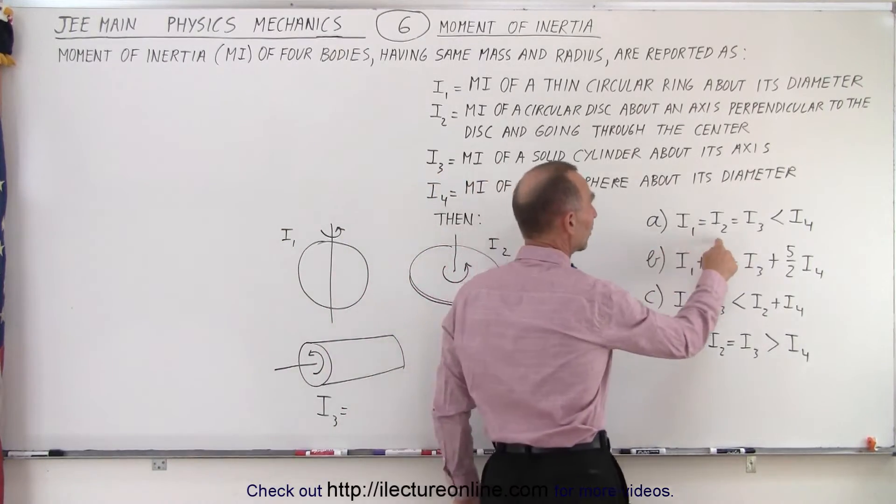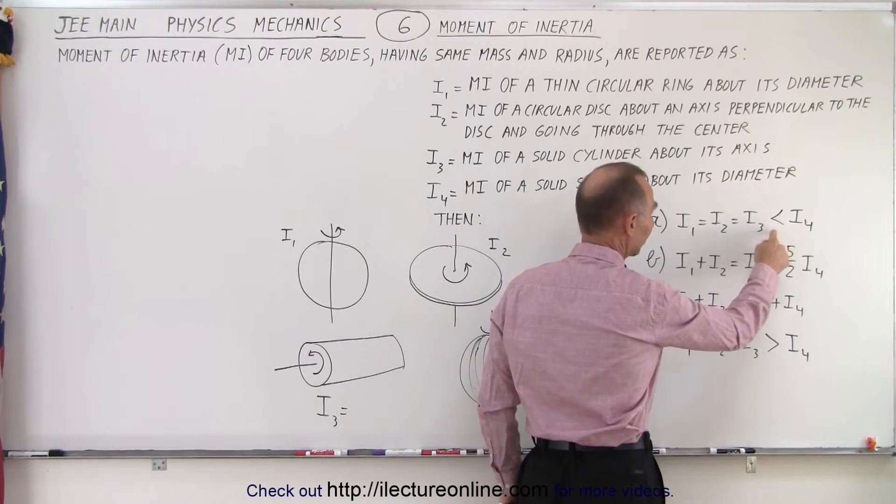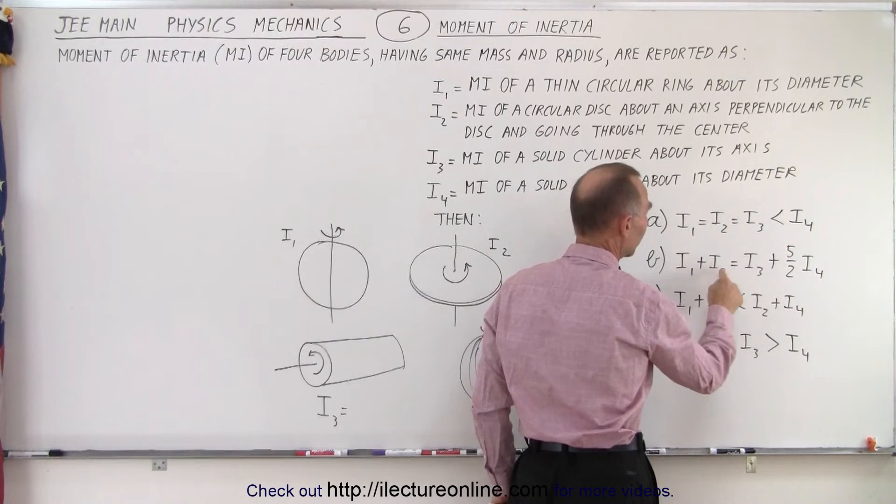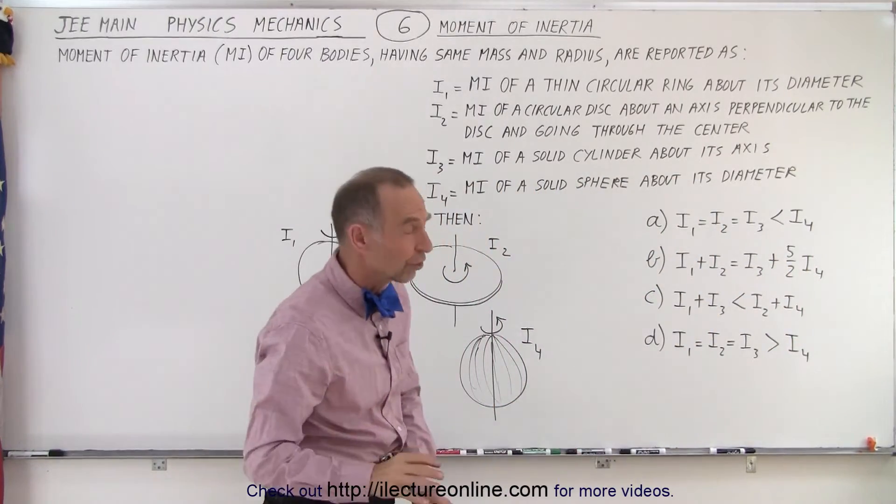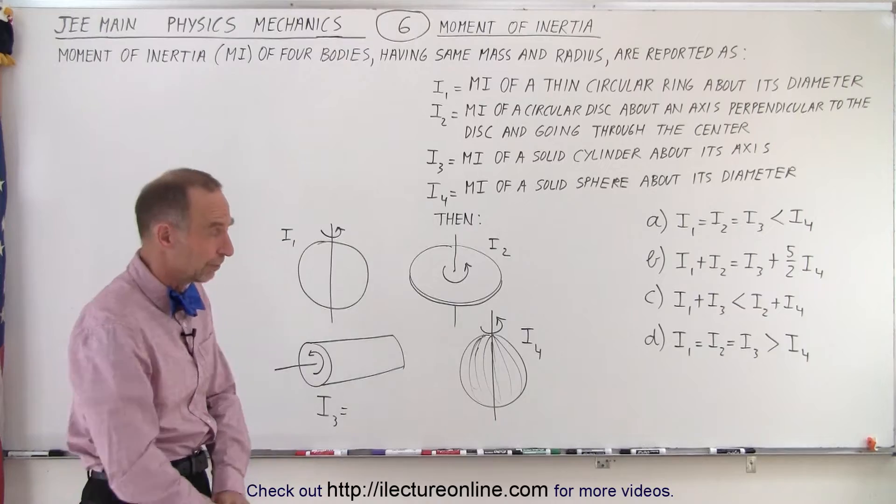Then they give us four statements. For example, I1 equals I2 equals I3 which is less than I4, or I1 plus I2 equals I3 plus five halves I4 and so forth. So which of those four statements is correct? It's only one of them.